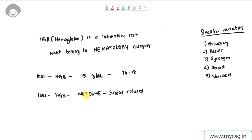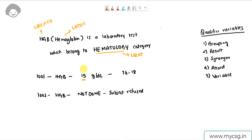Now let's identify the SDTM LB variables used to store these components. The short name HGB is stored in LBTESTCD, which is our topic variable in the LB domain. The full name 'hemoglobin' is stored in LBTEST. The category 'hematology' is stored in LBCAT. For subject 1001, the result value of 15 is stored in LBORRES, which is the original result variable.